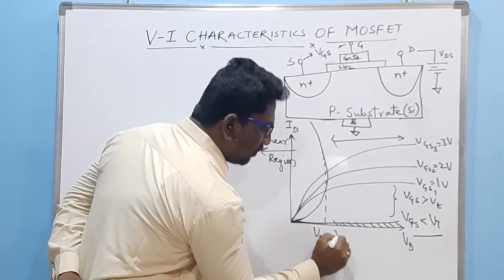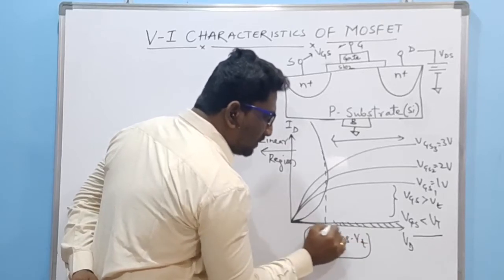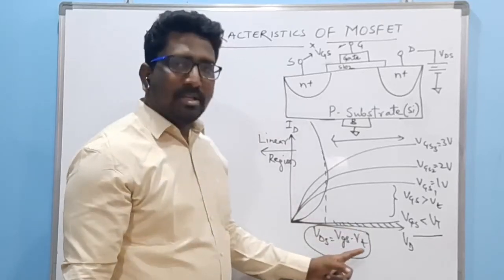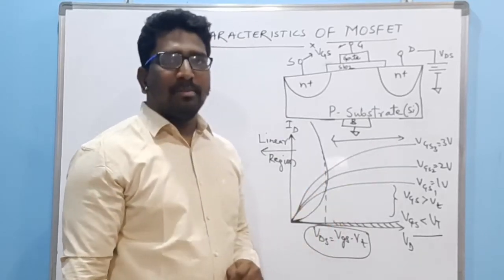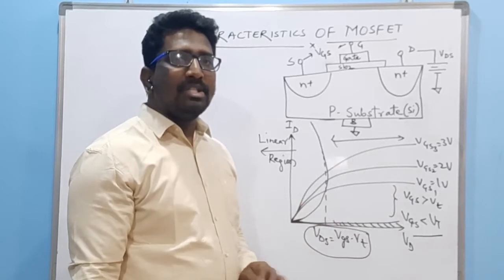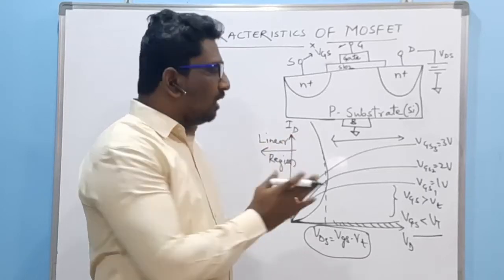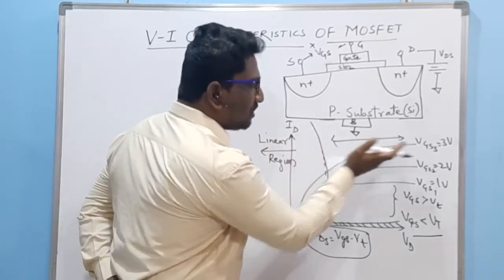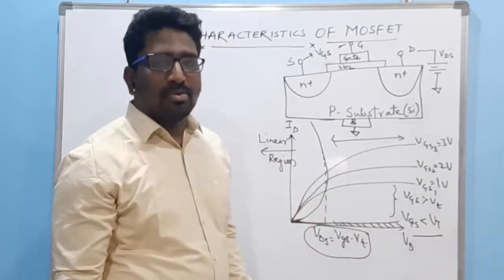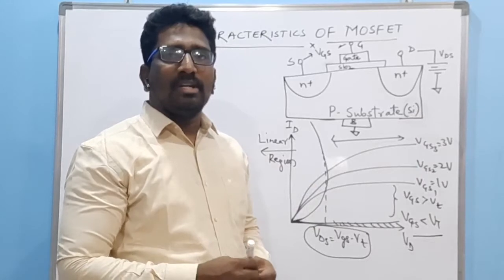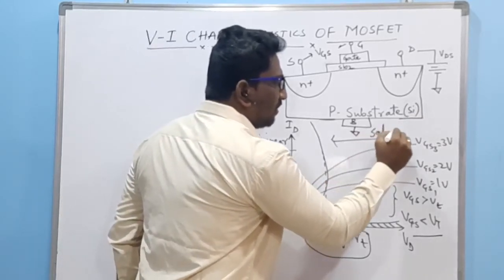Once VDS equals VGS minus Vt, the curve begins to bend — the current starts to stabilize and saturate. At this point the saturation region begins. As VDS increases further, the current gradually reaches a near-constant value, which is why we call this the saturation region.